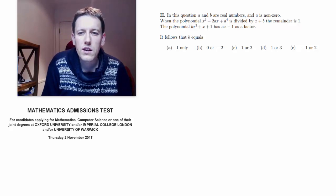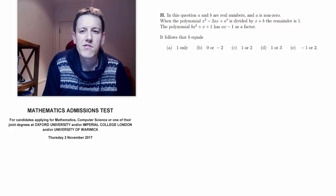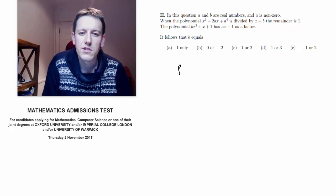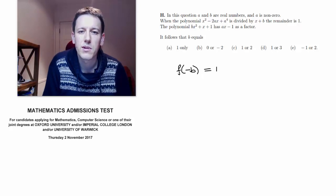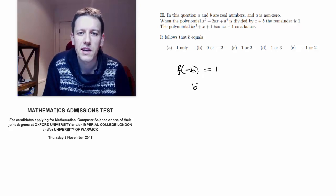Well, when this polynomial is divided by x plus b the remainder is 1, so the remainder theorem tells us that for that one, f of minus b equals 1, so I plug minus b into this polynomial and get b squared plus 2ab plus a to the power of 4 is equal to 1.